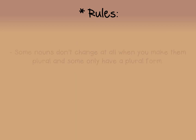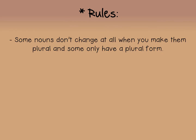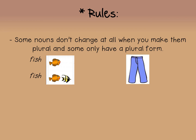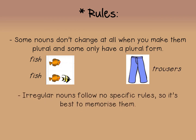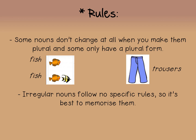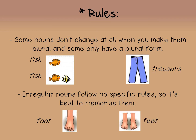The last two rules: some nouns don't change at all when you make them plural, and some only have a plural form. The word 'fish' stays 'fish' in its plural form, and the word 'trousers' only has a plural form. The last rule is irregular nouns — irregular nouns follow no specific rules, so it's best to memorize them. For example, 'foot' in its plural form is 'feet.' There are many more examples in Worksheet 1 and Worksheet 2. Make sure that you understand this work very well and are capable of answering any questions in regard to the language in Theme 6 and Theme 7.